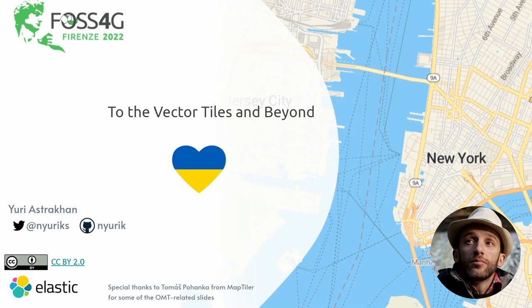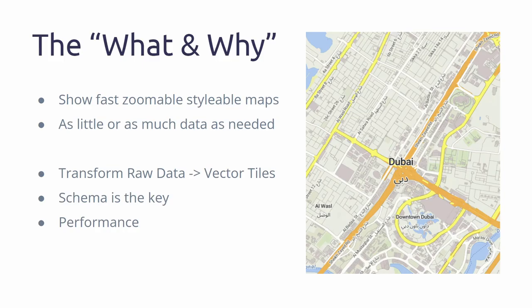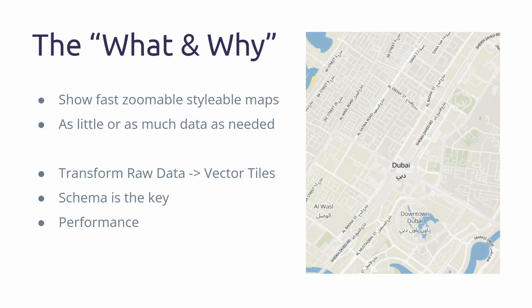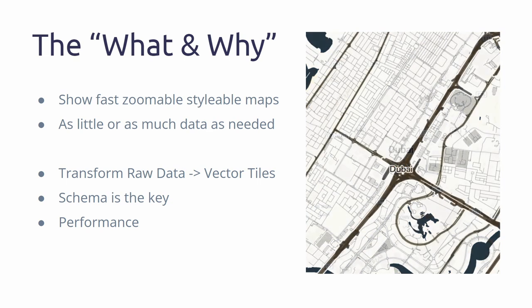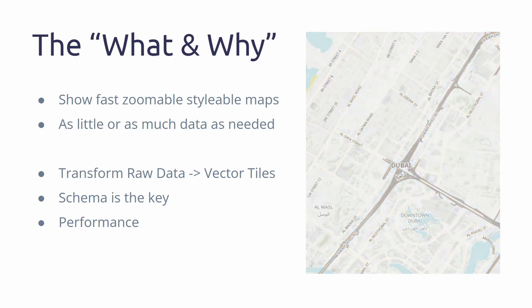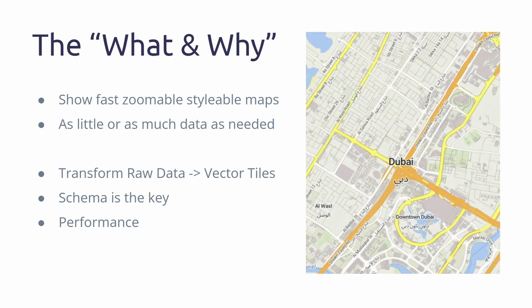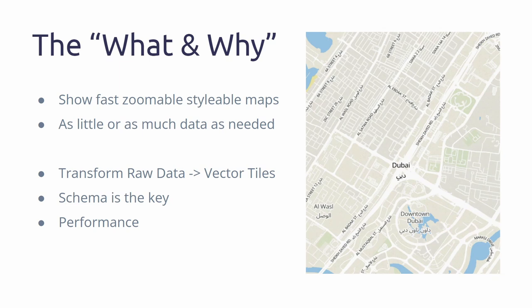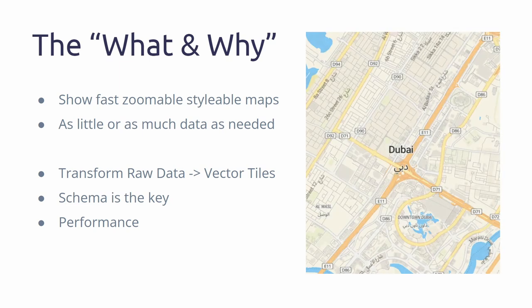Today I'm going to have a little presentation about how to get from raw data to vector tiles. We all know what vector tiles are — I'll try to go briefly into them, but not enough to bore you. So, to the vector tiles and beyond. The what and the why: you need to show a map, it has to be zoomable, it has to be really fast, responsive, have enough data to go into details, but not enough data to make your computer extremely slow when you're getting the overview.